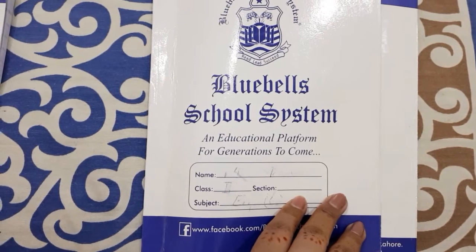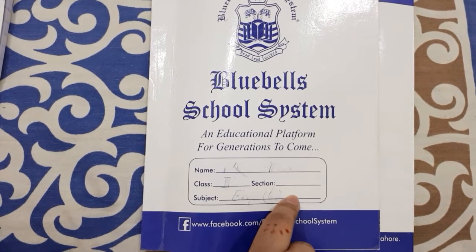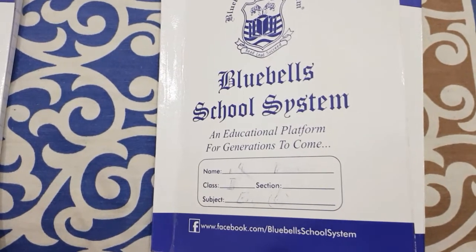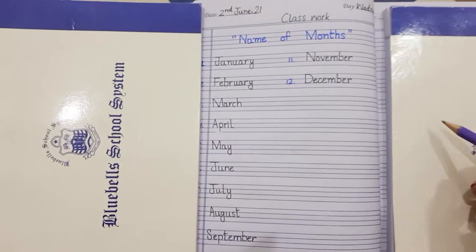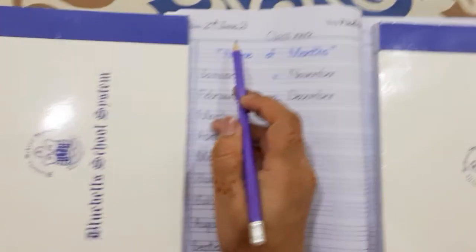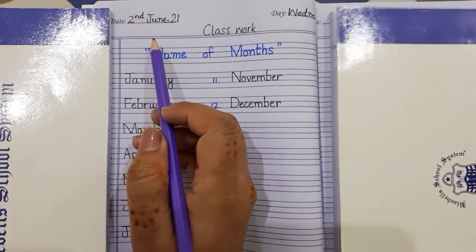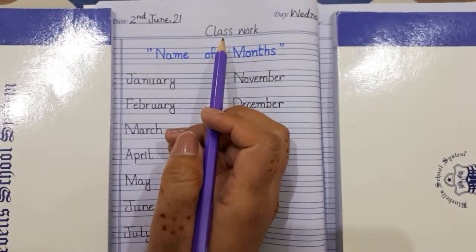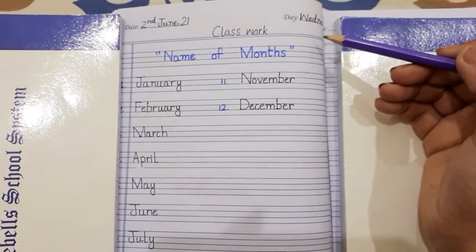First of all, take out your English grammar notebooks. Then we will start our working. Open your English grammar notebooks. First of all, write the date at the top of the page: 2nd June 2021. Classwork. Day is Wednesday.